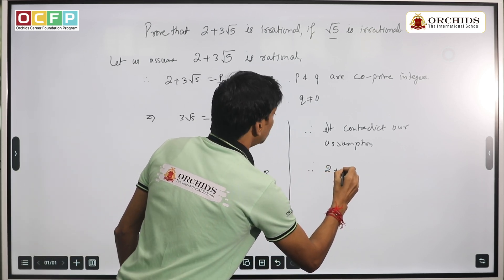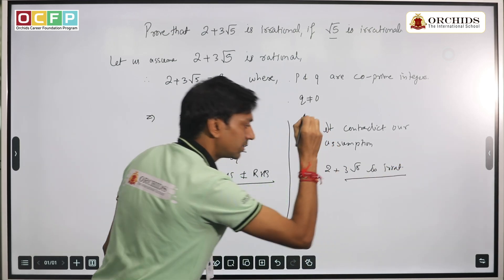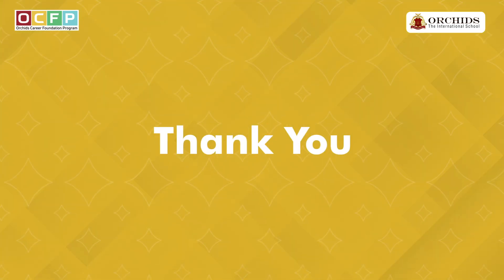Therefore, we can say that 2 + 3√5 is irrational, and hence it is proved. This is a two-marker question. Thank you so much.